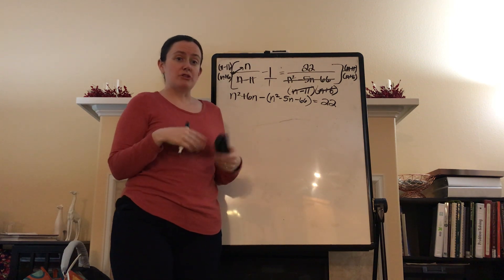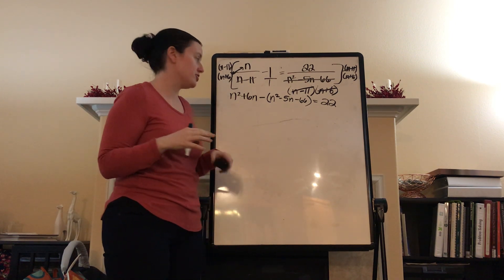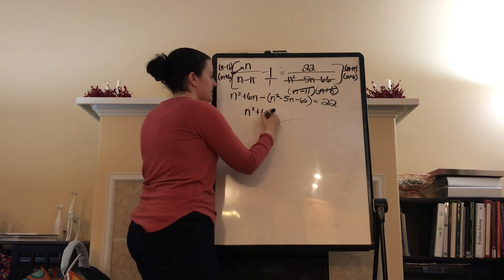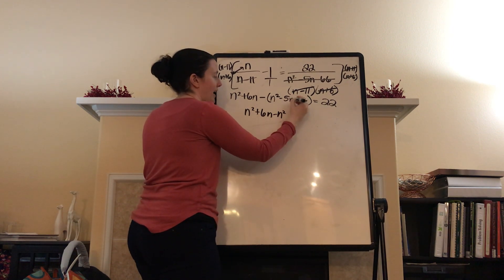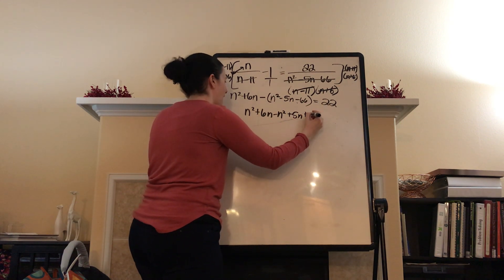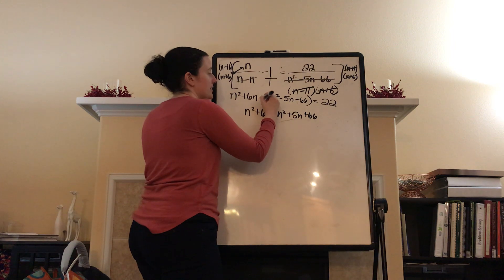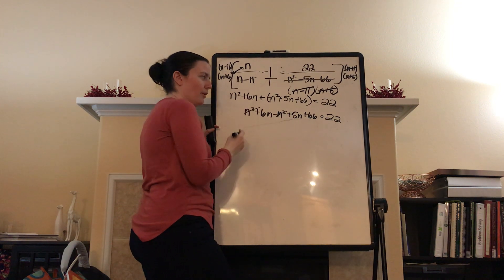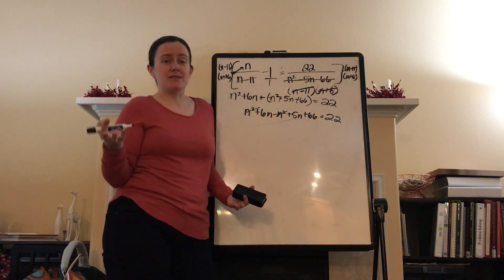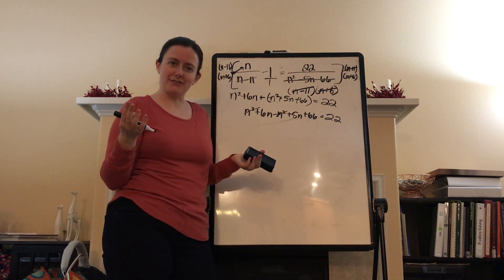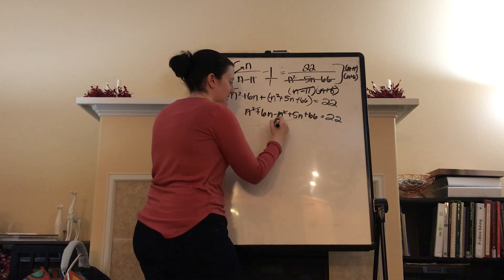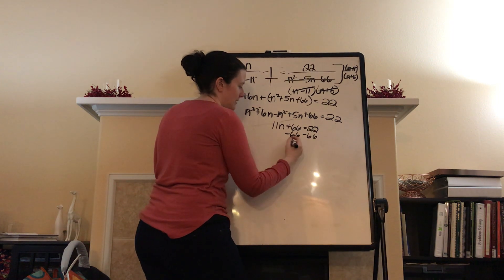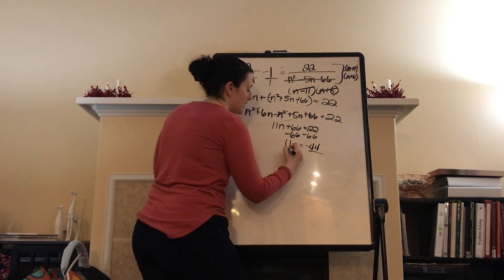At this point it's an equation you can solve — a nice, pretty, beautiful equation. I'll simplify the left-hand side: n squared plus 6n, then subtract n squared, add 5n (subtracting negative 5n), and add 66 (subtracting negative 66), equals 22. The n squared minus n squared cancels — that's really nice, because now it's not quadratic, it's just linear. 6n plus 5n is 11n, plus 66 equals 22. Subtract 66 from both sides: 11n equals negative 44. Divide both sides by 11: n equals negative 4.